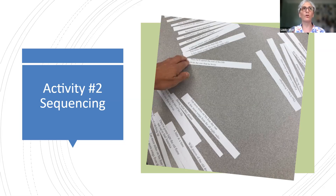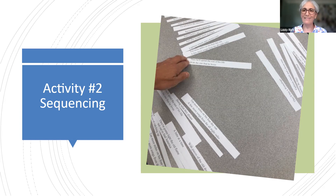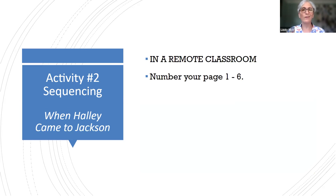I've also done it where I cut the words into bigger pieces of paper and have students stand up when they hear their part of the song the first time. Then the second time, I have them stand up and move themselves physically in the space. I do that not for every song, but every so often — it's another way of getting them physically involved. In a remote classroom, the sequencing activity looks a little bit different. Number your page one through six.